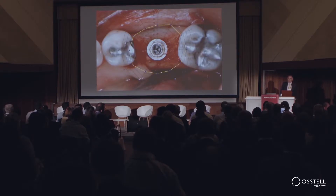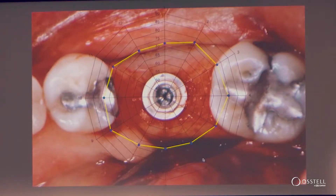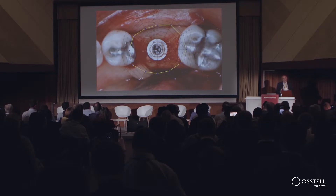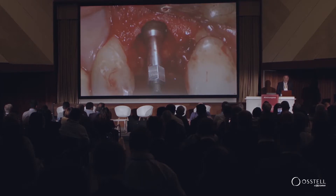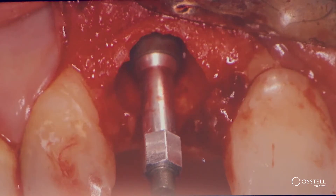If we measure stability around the implant, we can see that it's clearly lower across the implant where it's easier to bend the mandible, while in the mesial-distal direction it's going to be a lot stiffer. This becomes really important in cases with extraction sockets and immediate loading, where the bone-to-implant contact is not uniform and not symmetrical.